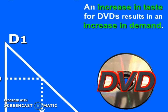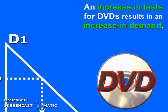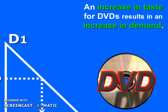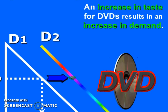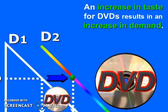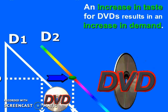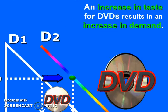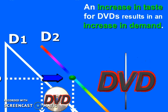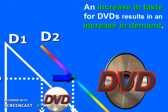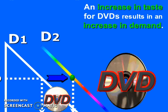An increase in taste for DVDs results in an increase in demand, and we can see that the demand curve shifts rightward. This is called shifting the whole curve — the whole curve shifts rightward from D1 to D2.